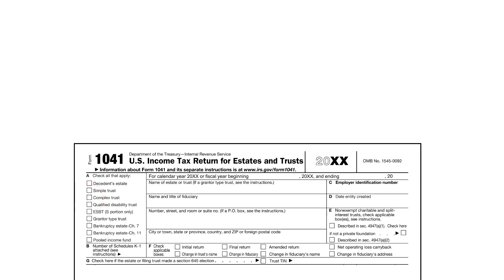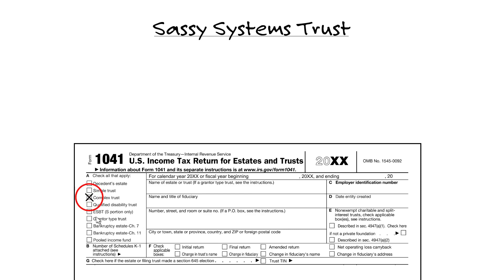In scenario four, the SASE Systems Trust will be a complex trust in the year of termination because even if it was a simple trust, in the year of termination it distributes all its principal. When you distribute principal, you're not a simple trust, you're a complex trust. The trust may have been a simple trust in previous years, but a simple trust is treated as complex in the year it terminates because corpus principal is being distributed. Therefore, we move it down and say it's a complex trust.